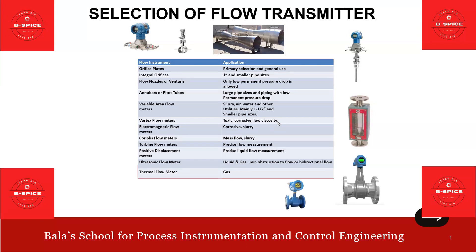Electromagnetic flow meter is used for corrosive and slurry applications. Coriolis flow meter is used for mass flow and slurry applications. Turbine flow meter is used for precise flow measurement with high accuracy. Positive displacement meter is used for precise liquid flow measurement.